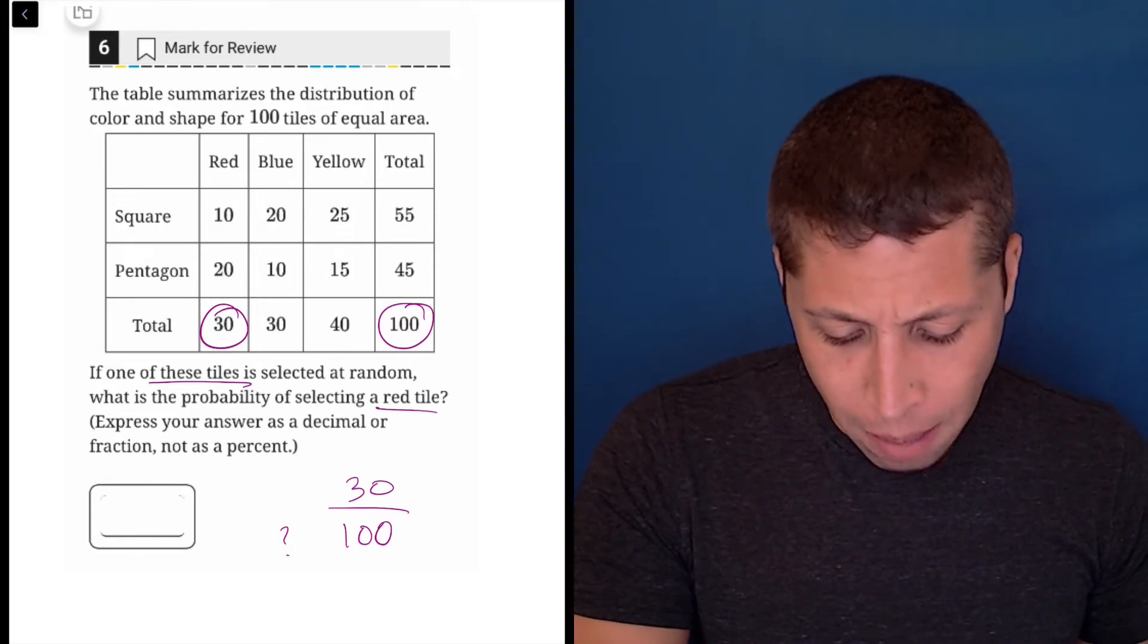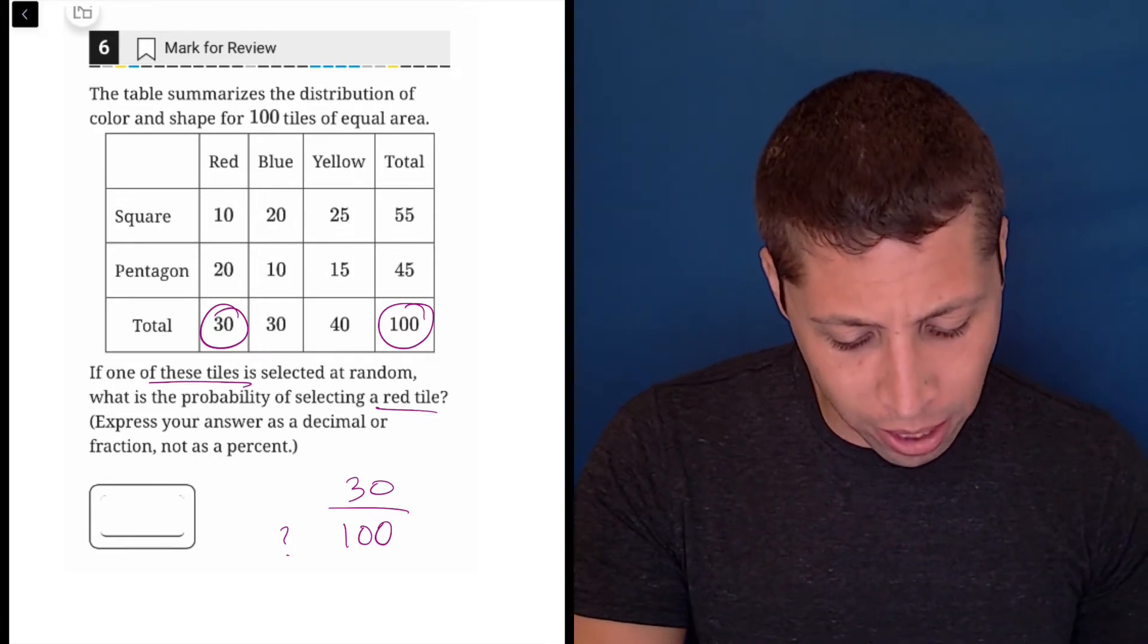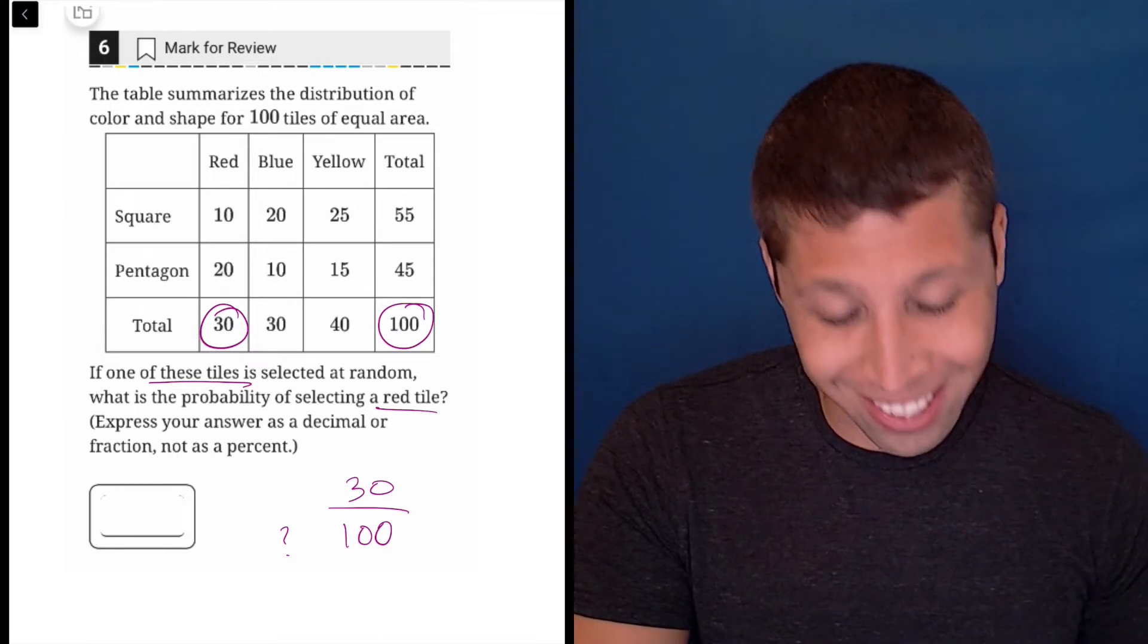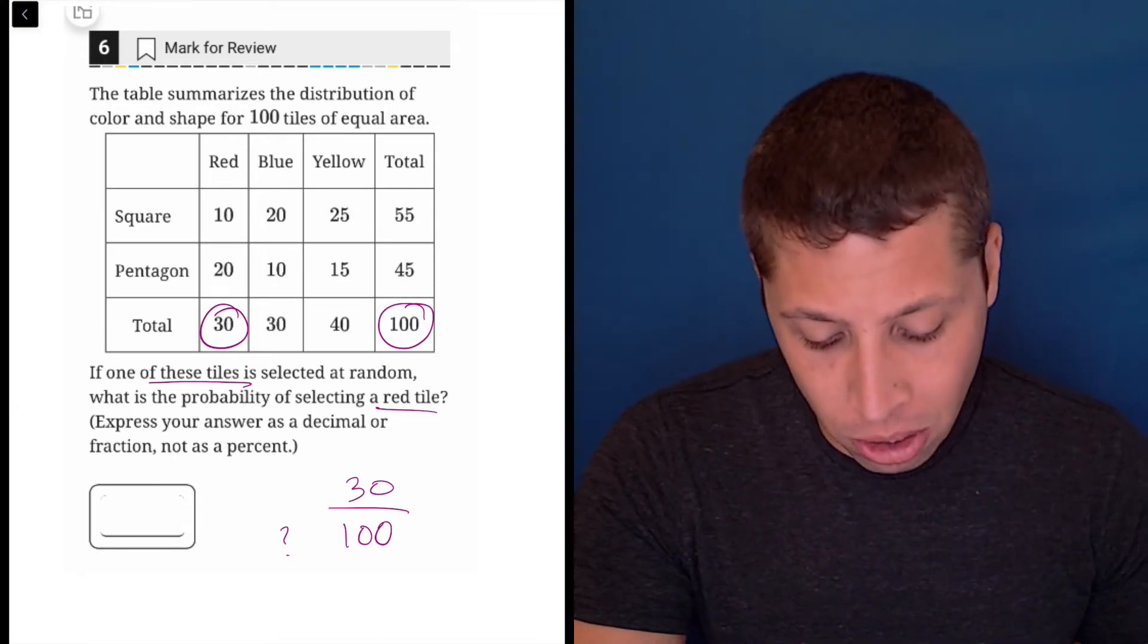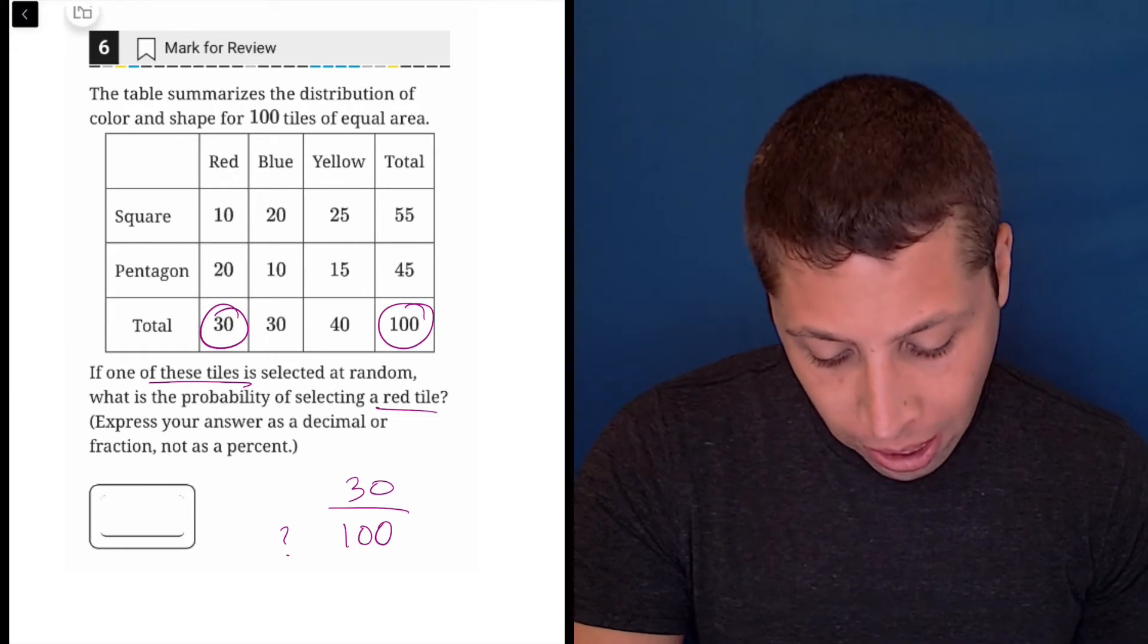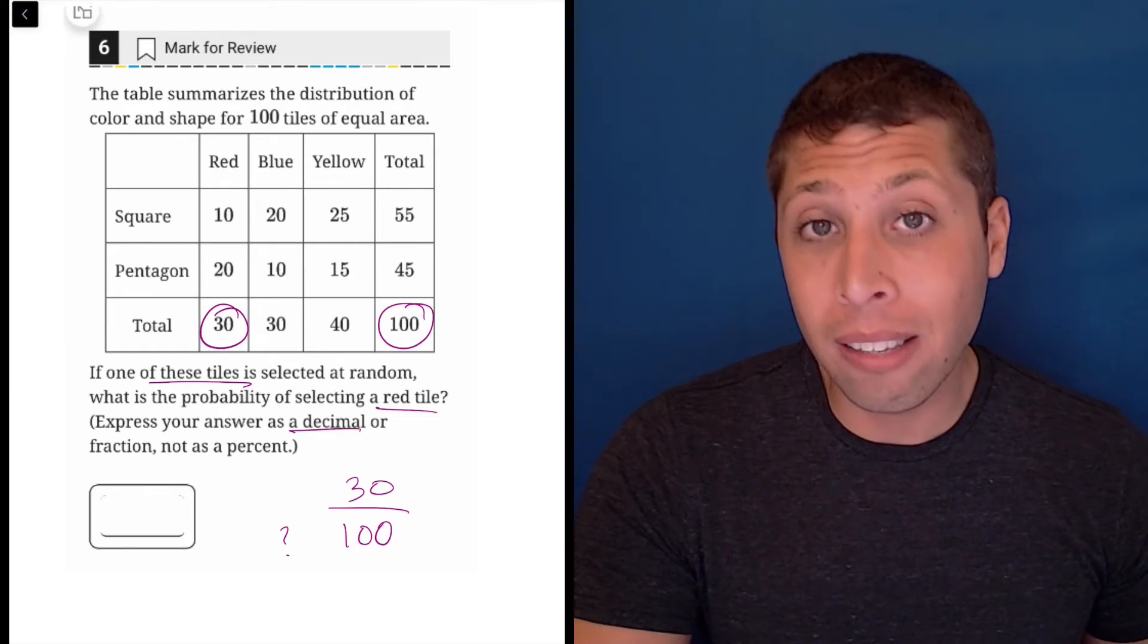I believe that's not bubble. You can't bubble that. You're going to run out of spaces, one, two, three, four, five, six. See, I think you can only bubble five spaces for positive numbers, but it does say express your answer as a decimal, so we can easily do that.